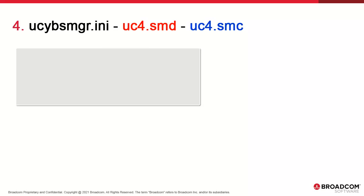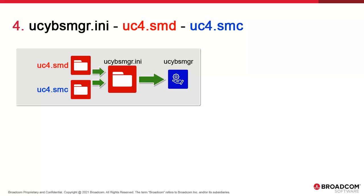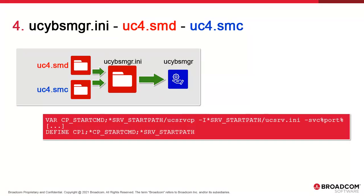We've color-coded each file — red for definitions and blue for commands. When you start the Service Manager process, it looks at the INI file. The INI contains references to SMD and SMC in the Destination section. The definitions file uses simple syntax involving setting file paths and commands as variables, and then defining matching services. Here's an example of a CP: it sets a variable cp_start_cmd, the start path defined in the SMD, the dash-I option, the INI file, and the port.